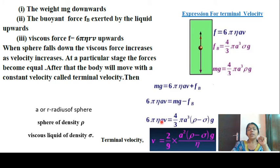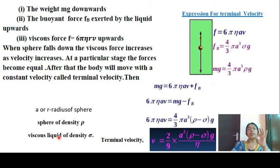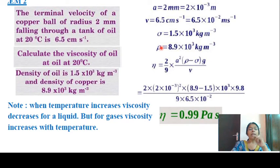The terminal velocity equation is: v equals 2/9 into r squared into (rho minus sigma) into g divided by eta. Here, r is the radius of the sphere, rho is the sphere density, and sigma is the viscous liquid density.